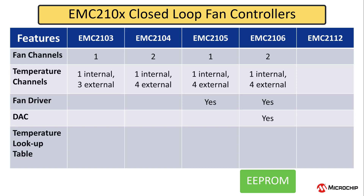In addition to using the fan speed control algorithm, these devices can use a temperature lookup table to vary fan speed. Finally, there's the EMC 2112, which has one fan channel, three temperature channels, and a built-in 600 milliamp linear fan driver. This device does not utilize the lookup table, but it does still have all the other features common to the closed-loop fan controllers.